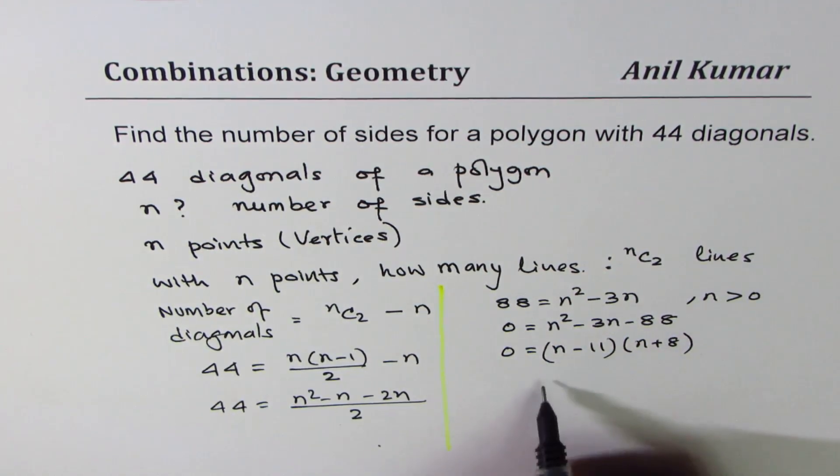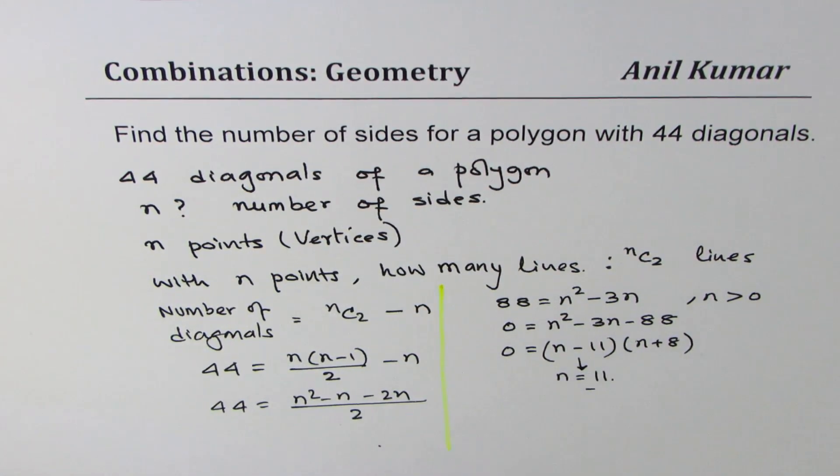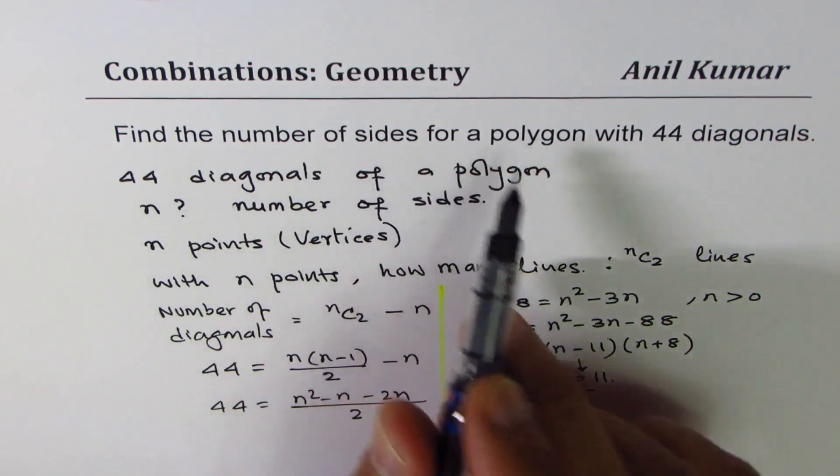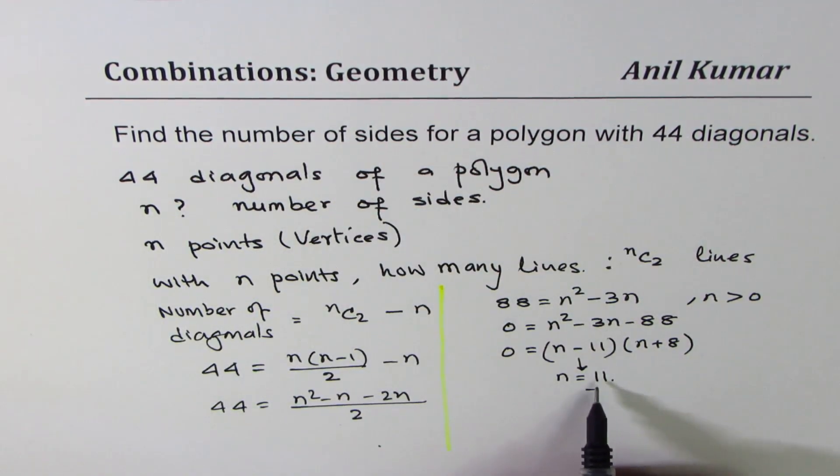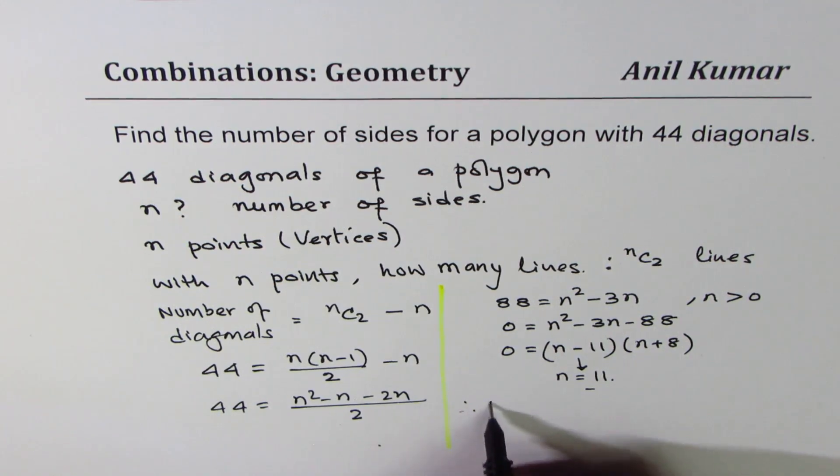Minus 8 is not valid and n has to be greater than 0, right? So n equals to 11 is the solution. So there are n sides of this polygon, so find the number of sides, it is an 11 sided figure. Therefore polygon will have 11 sides.